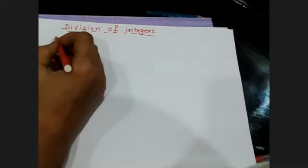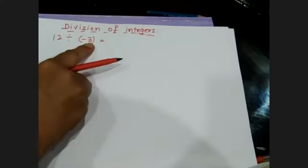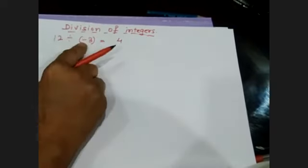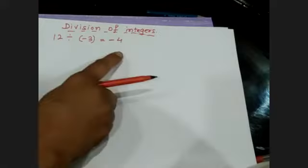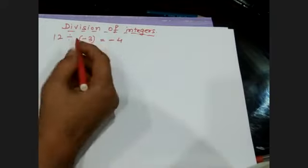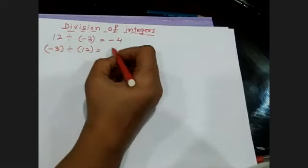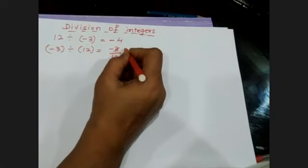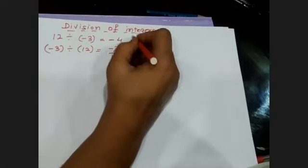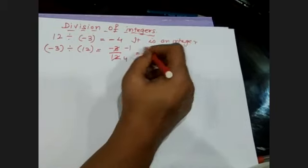First we will discuss the properties of division of integers. For example: 12 divided by minus 3. You divide 12 by 3, which equals 4. Here the dividend has a plus sign and the divisor has a minus sign, so 12 divided by minus 3 equals minus 4. Minus 4 is also an integer. But if you divide minus 3 by 12, it equals minus 1 over 4, which is not an integer — it is a fraction.